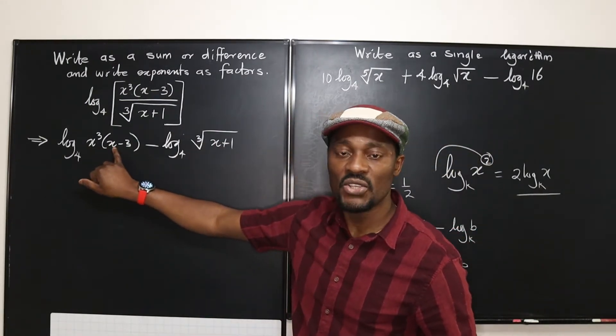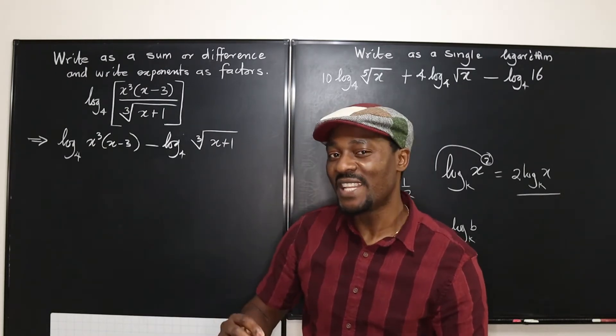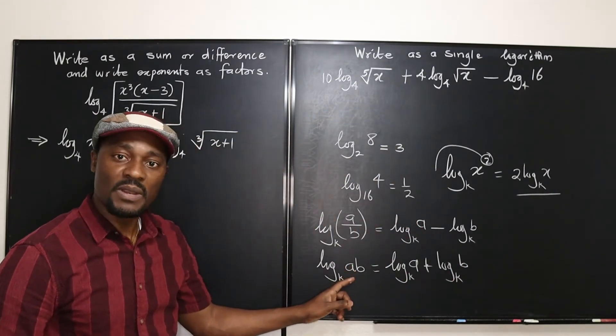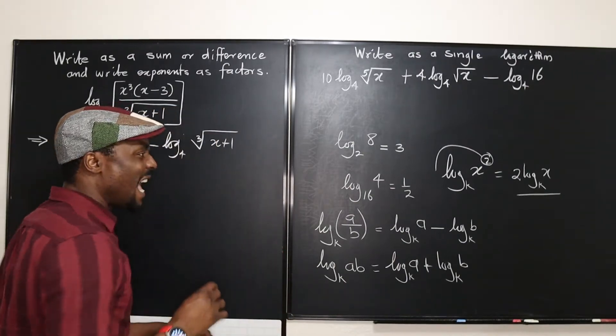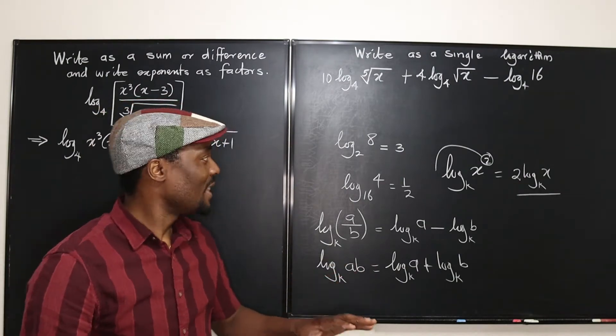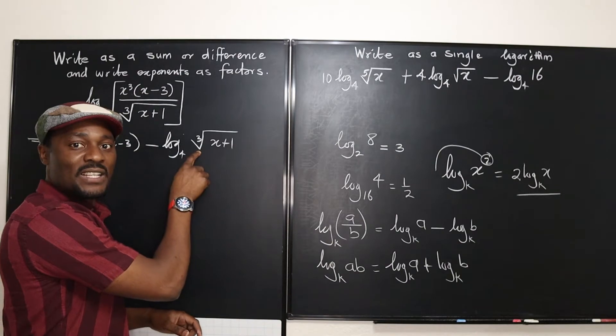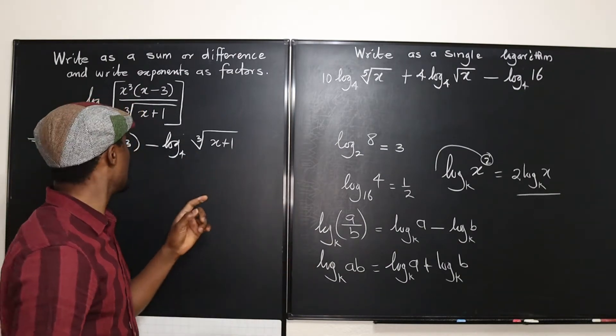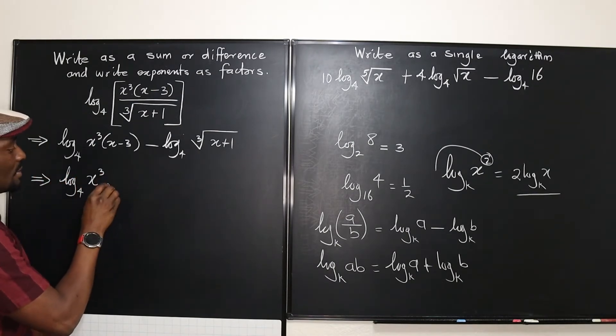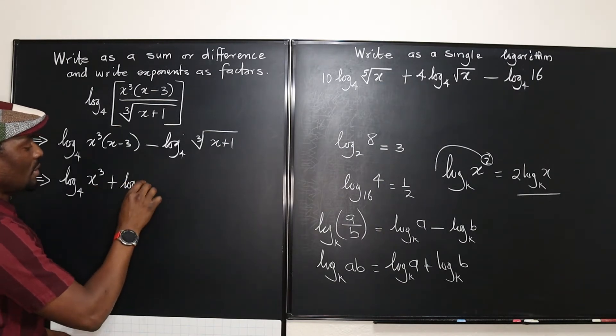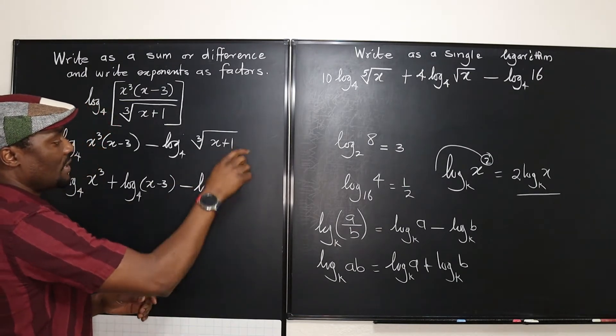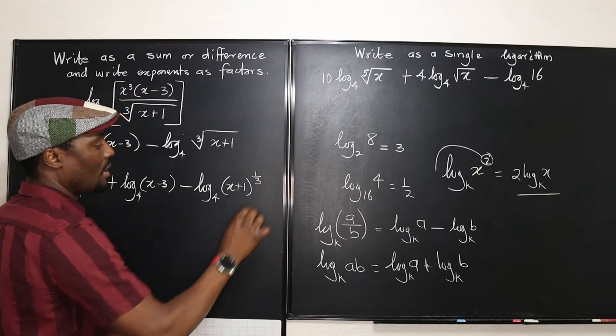We still have factors here multiplying each other. We don't want anything multiplying anything. And we don't want anything dividing anything. So these factors now, we're going to apply this second rule to it. When two things are multiplying, it means you're adding their logarithms. So we're going to do that also. And we can kill two birds with one stone. So what we're going to do at this point also is to rewrite this radical sign as an exponent. So that would be 1 over 3, 1 third. And that's it. So let's write this. This is going to be the logarithm to base 4 of x cubed plus the logarithm to base 4 of x minus 3, and minus the logarithm to base 4 of this expression is the same thing as x plus 1 to the 1 third.